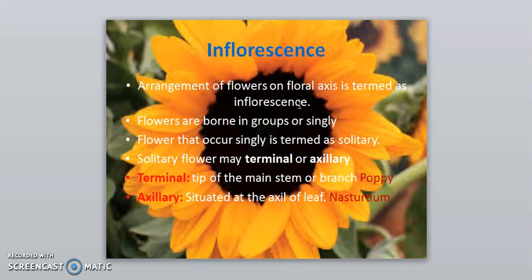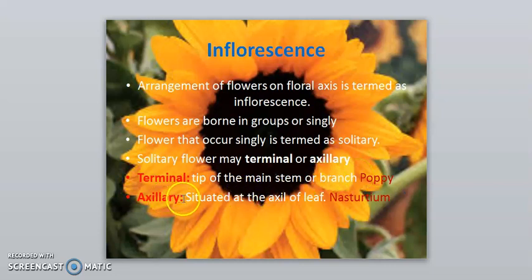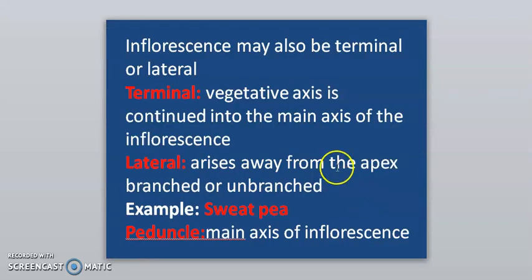Flowers are borne in groups or singly. A flower that occurs singly is termed as solitary. These solitary flowers may be terminal or axillary. Terminal flowers are those that grow at the tip of the main stem or branch — example is the poppy plant. Axillary flowers are those situated at the axil of a leaf — example is Noctardium.